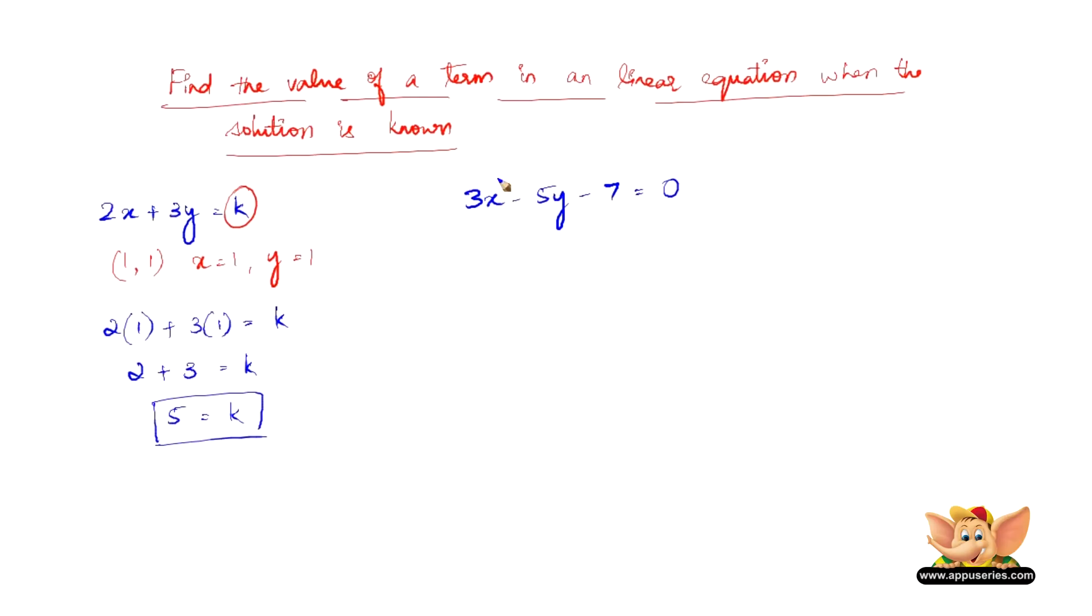But then, the question here is, this is the equation. Now if x equals 2k minus 1 and y equals k, we need to find the value of k. This is a slightly different question. So let us see how do we go about doing this problem.